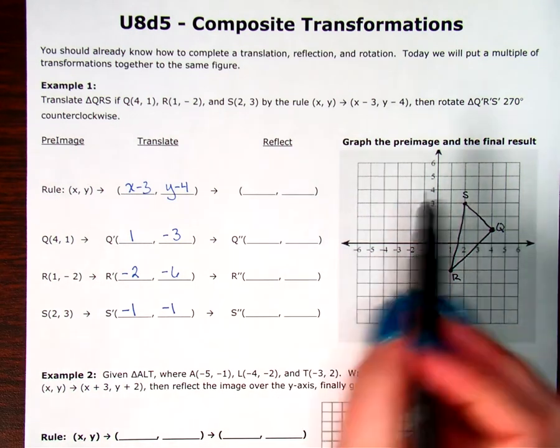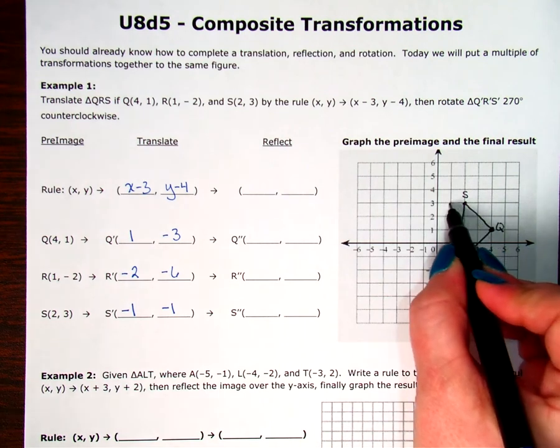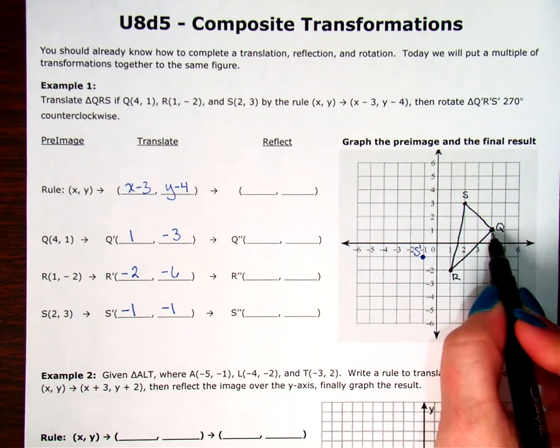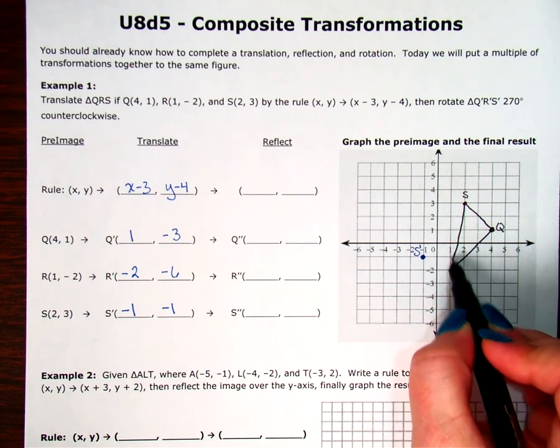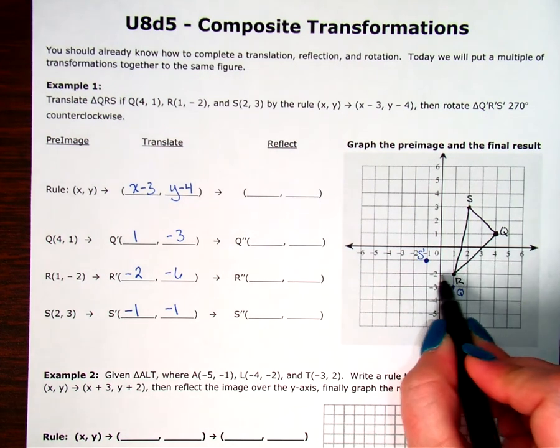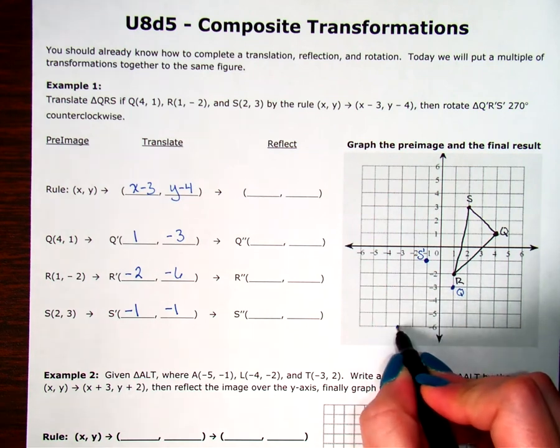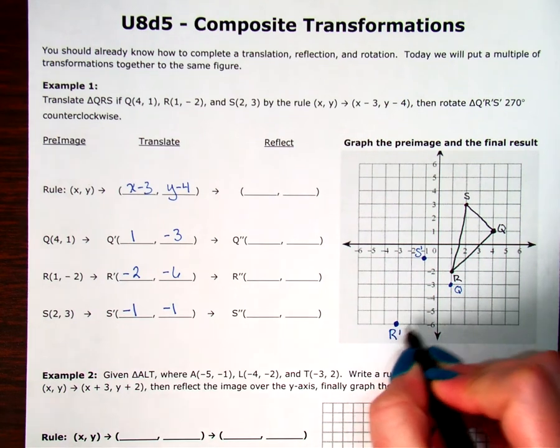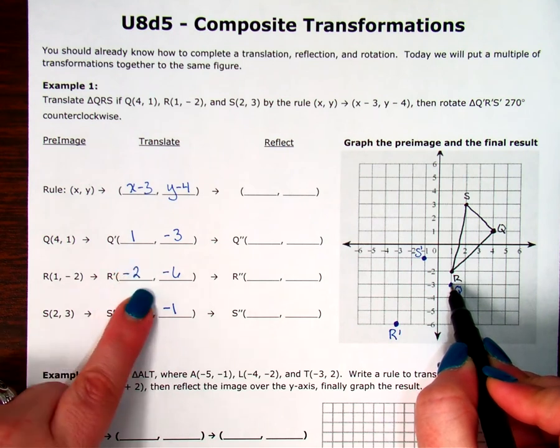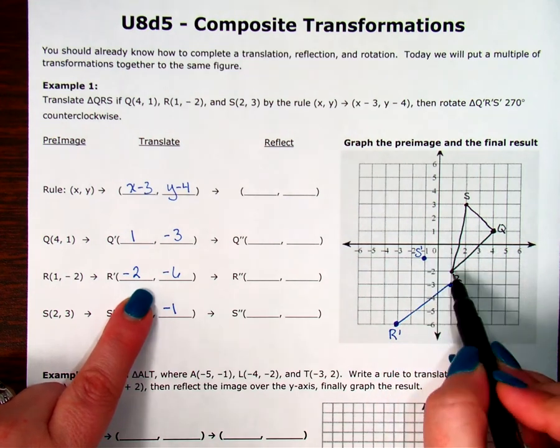And then, we translated by negative 3, negative 4. So, we went left 3, down 4. So, each point went left 3, down 4. S prime. Back 3, down 4. Q prime. Back 3, down 4.